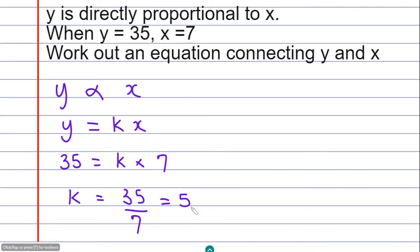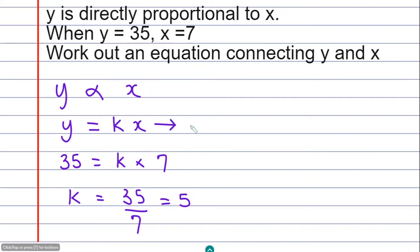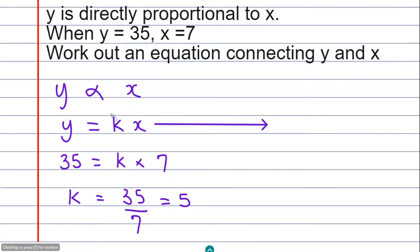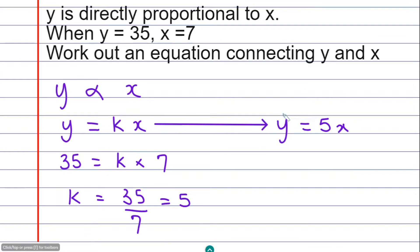This constant 5 I'm going to substitute for k in the equation to get a connecting equation. I'll draw a line here to help. Substituting the value for k, we get y = 5x. This is the equation connecting y and x.